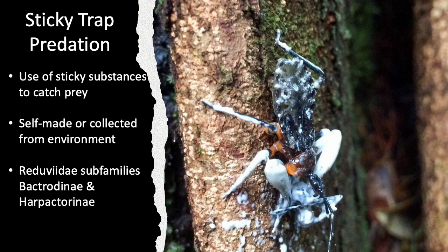On with the show. As some of you might recall, Fernando gave a talk on this subject last year. Today I'm going to give a little bit of a recap, and then talk about some of the work that's happened since then. So, sticky trap predation is a behavior of using sticky substances to catch prey, as the name suggests, and in assassin bugs it occurs in the Bactrodinae and Harpactrodinae.